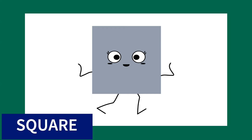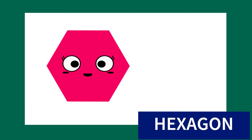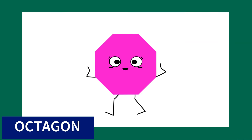Square. This shape is called square. Cross. This shape is called cross. Hexagon. This shape is called hexagon. Octagon. This shape is called octagon.